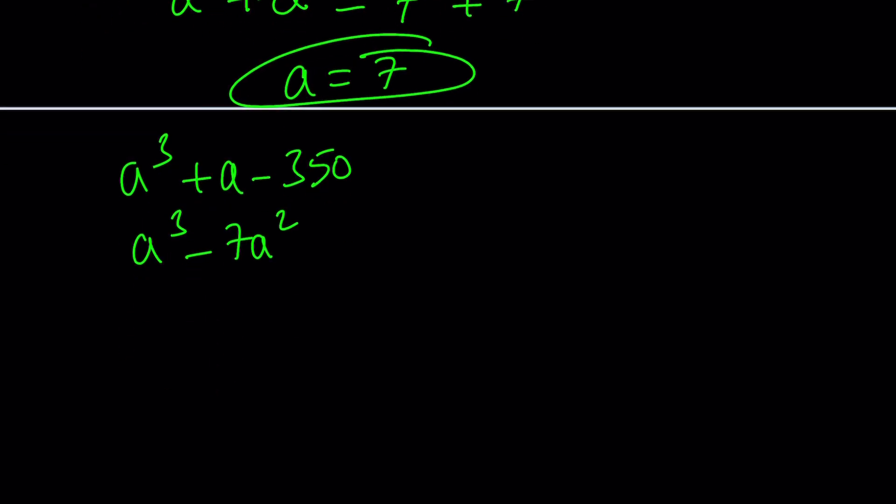Our goal is to get a - 7 because the factor theorem tells us that if a = 7 is a solution, then a - 7 must be a factor. That gives us a - 7 if you factor out a². But then you have to add 7a² because we didn't have it in the first place. This needs to be followed by 49a.